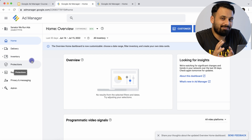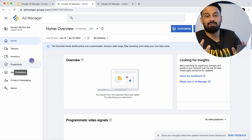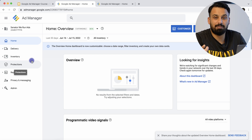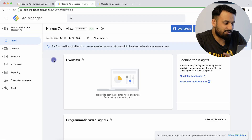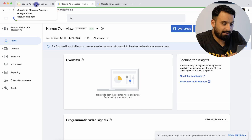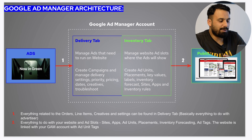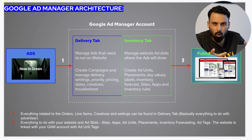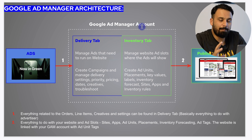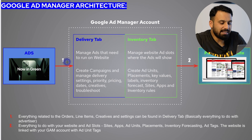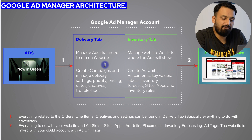Before we go into each of these tabs, it's very important that I give you a brief idea about the architecture — how the Google Ad Manager account looks. These slides will give you a quick overview and make you familiar with each of the tabs in the left navigation panel. We will discuss each of them one by one briefly, and then we'll come back to the account and I will show you each of the options available. Remember, this is just an overview video — we will not dig too much deeper into each of the options.